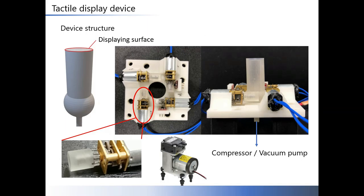This shows the structure of the tactile display device. The device structure is as shown in the photo. This part has a hollow and multiple small holes on the display surface. This part is a fixture fitted with four motors to move the part. To display shear force, compressor and vacuum pump is used as air pressure control. Air control is used to display the stick ratio.